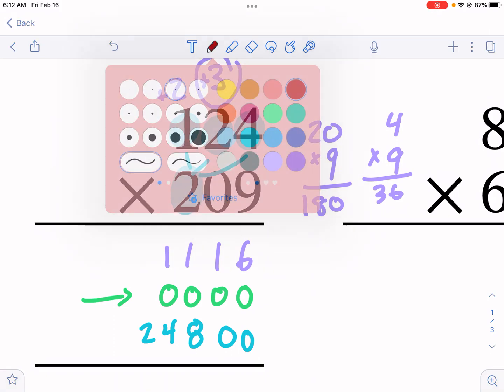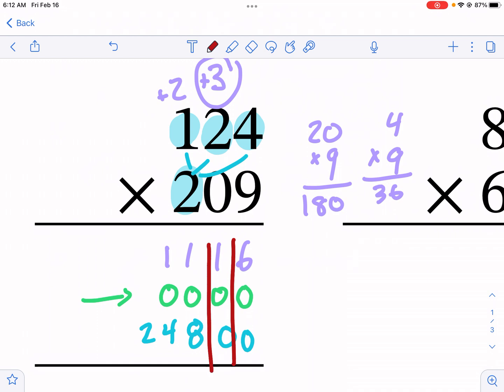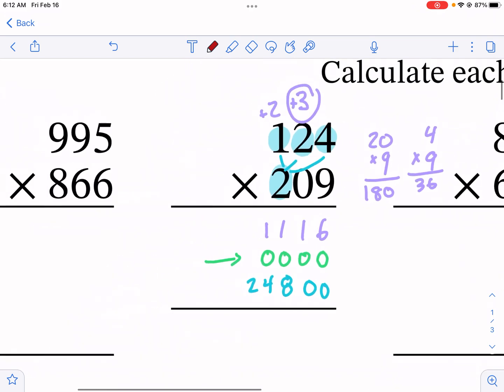One of the, another common mistake I see is students don't have these lined up. They're all scattered all over the place and they add incorrectly because they're adding, for example, tens place with hundreds place numbers. You don't want to do that. You want to make sure you are organized, take as much space as you need and then go on from there.